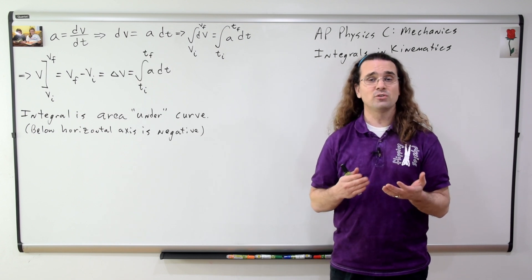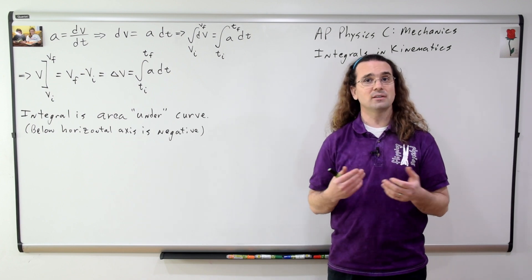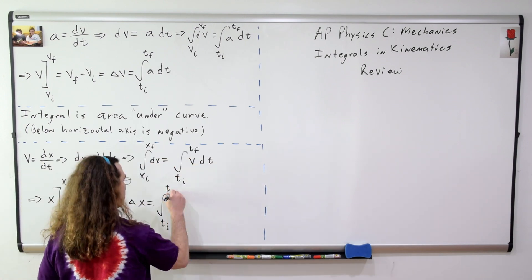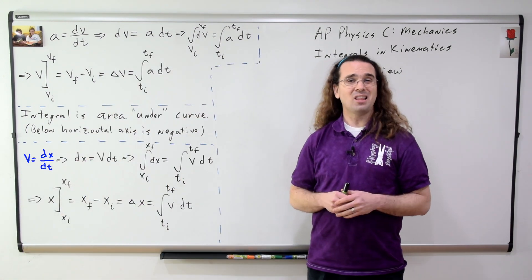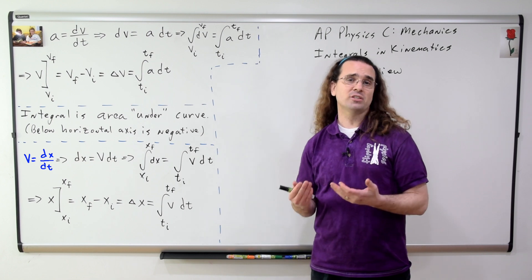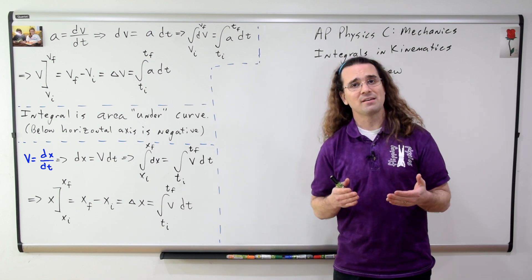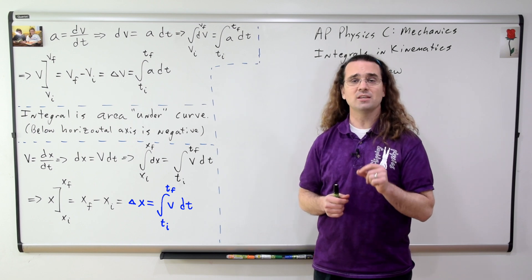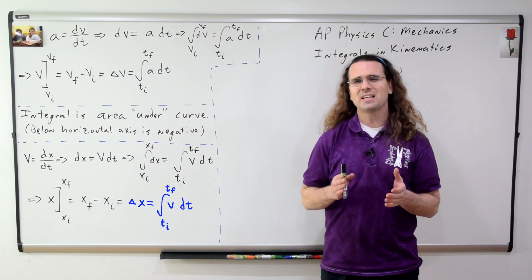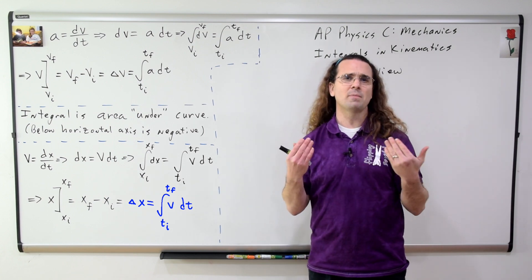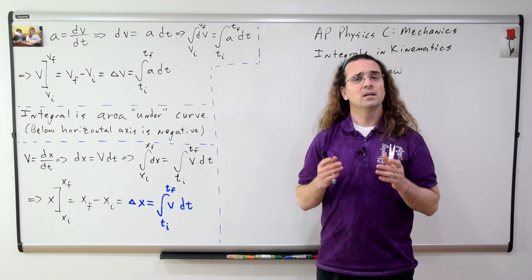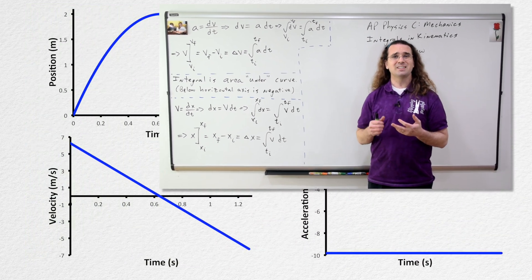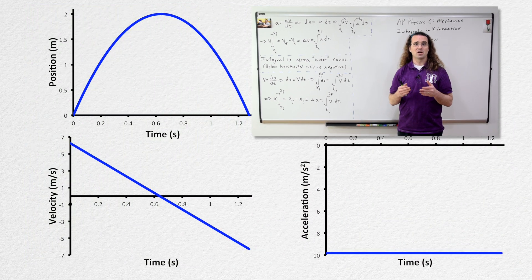And now we can do the same thing we just did with acceleration, but with velocity. Starting with velocity equals the derivative of position as a function of time, we can arrive at the fact that displacement equals the definite integral of velocity with respect to time. Let's move on to graphs of position, velocity, and acceleration as a function of time.